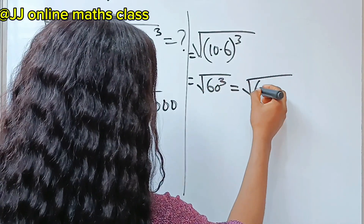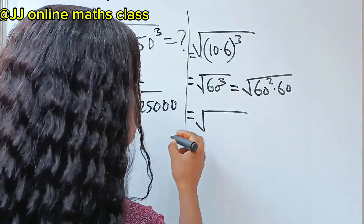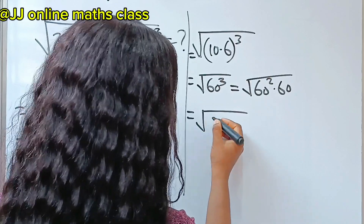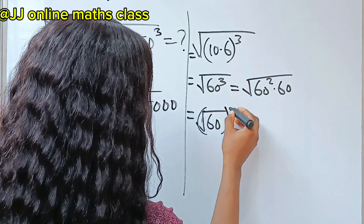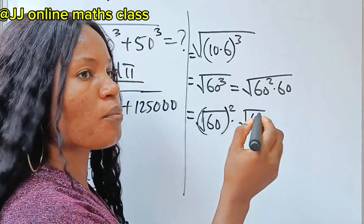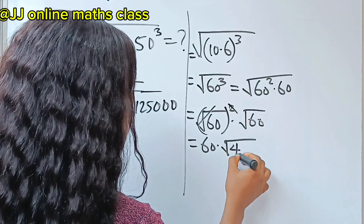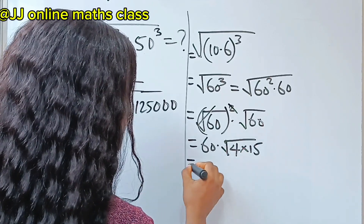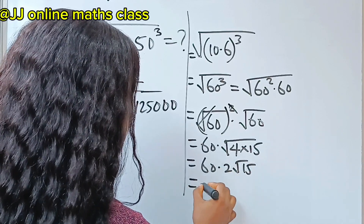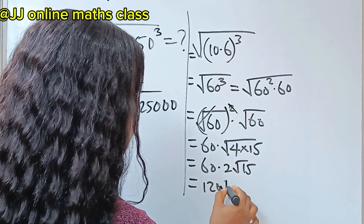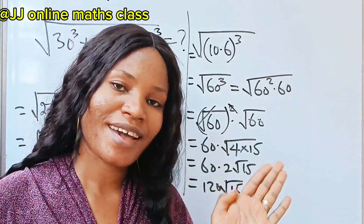Which is equal to square root of 60 squared multiplied by 60, which is equal to square root of 60 squared, multiplied by square root of 60. This gives us 60 multiplied by square root of 4 times 15, so this is 60 multiplied by 2 root 15, which gives us the same answer: 120 root 15. Thank you so much for watching, have a lovely day.